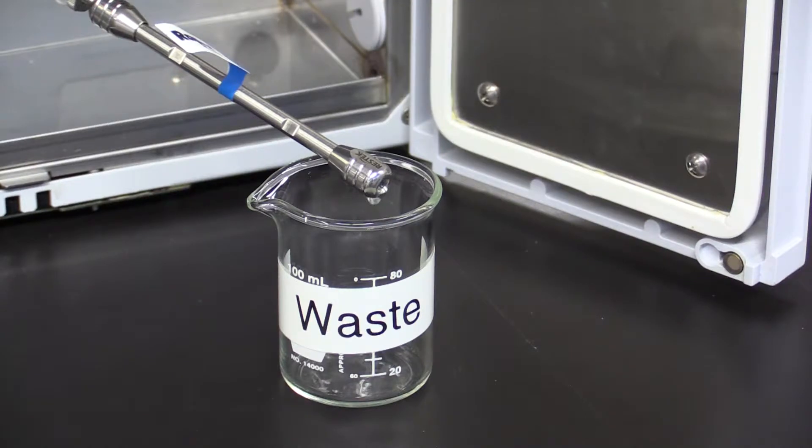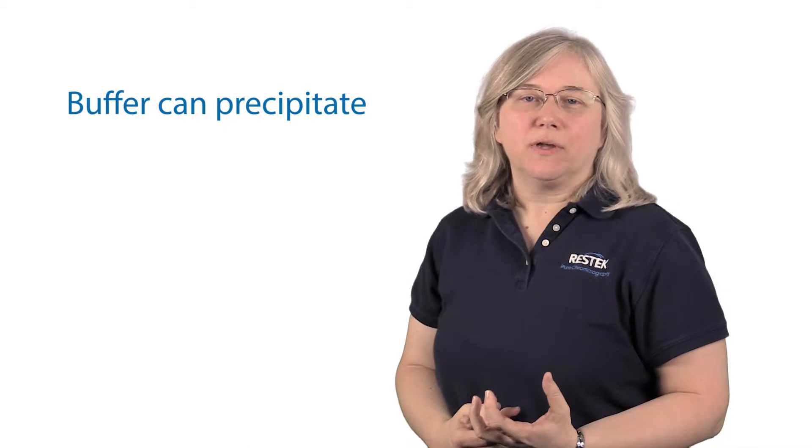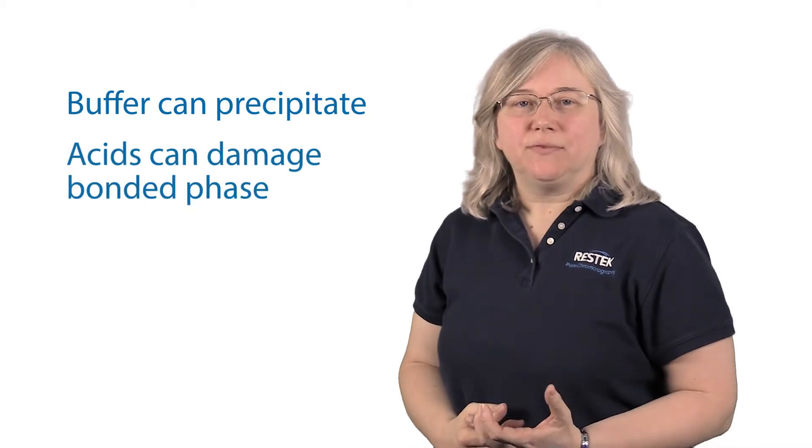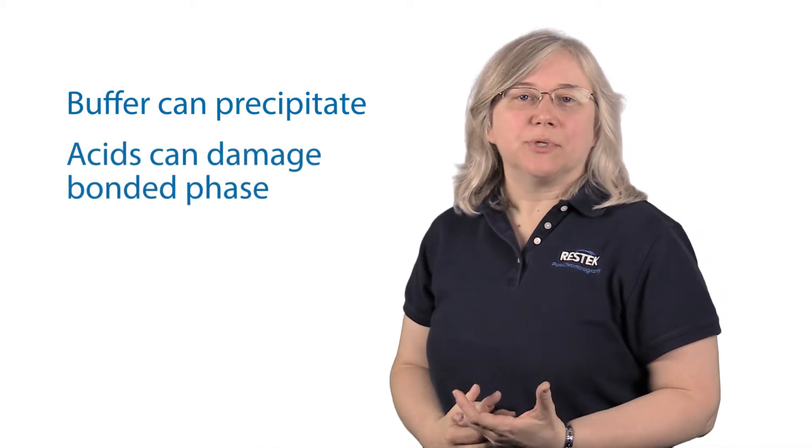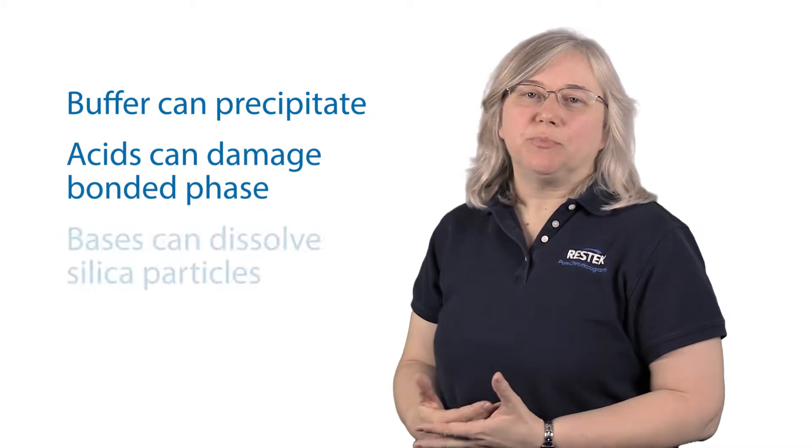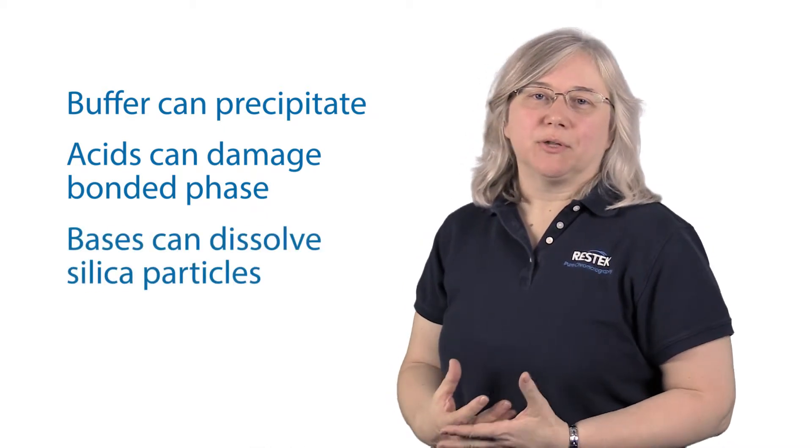But when it comes time to give a column a break, it's important to store it properly so it's ready to go the next time you need it. The first thing to do is flush out any buffers, acids or bases that are part of your mobile phase system. This is important because any particulates from the buffer could precipitate and clog the column. Too much acid left in the column could hydrolyze the ligand from the silica surface and too much base could start to dissolve the silica particle itself.